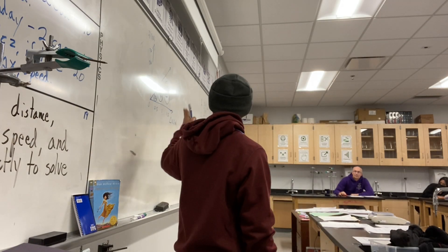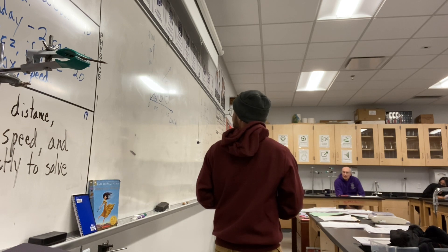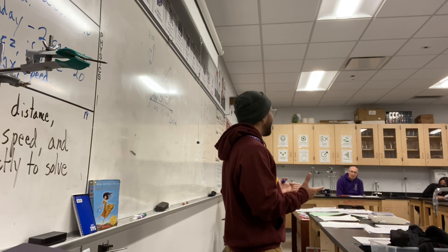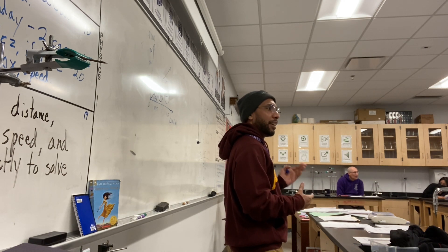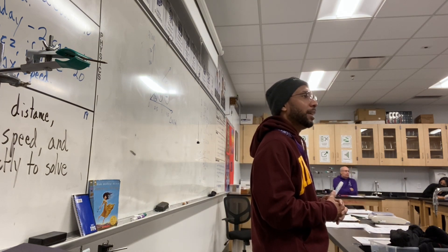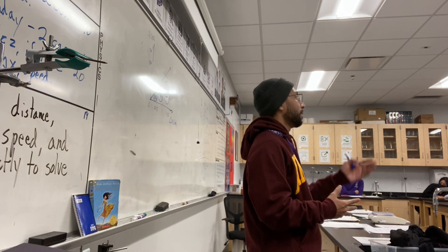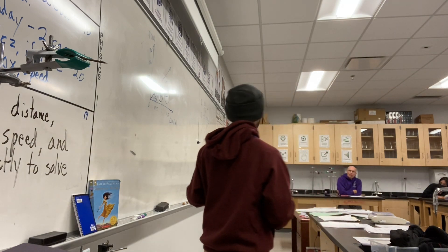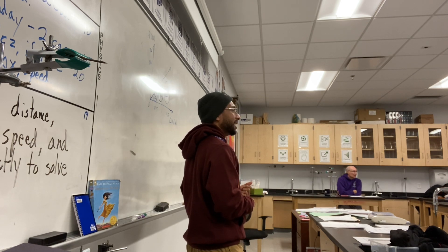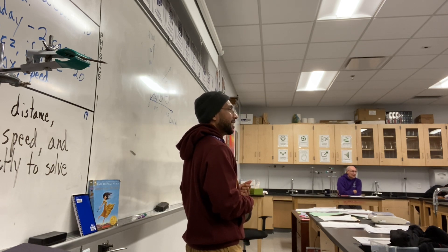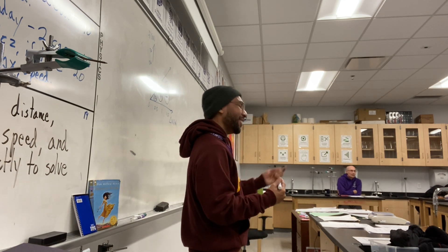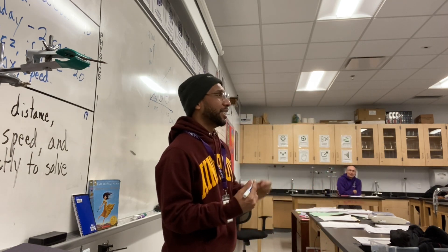We have three different parts representing the energy stored in the spring. There are two variables that determine how much energy is stored in the spring. One of those variables is delta x — the change in x, which represents the stretch.